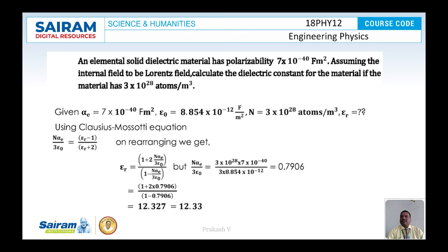What is the value of εᵣ? According to the Clausius-Mossotti relation: nαₑ/(3ε₀) = (εᵣ − 1)/(εᵣ + 2). Rearranging εᵣ, the value of nαₑ/(3ε₀) is calculated as 0.7906. Substituting in the equation, we get εᵣ = 12.327, approximately 12.33. This is the way of calculating εᵣ using the Clausius-Mossotti equation.